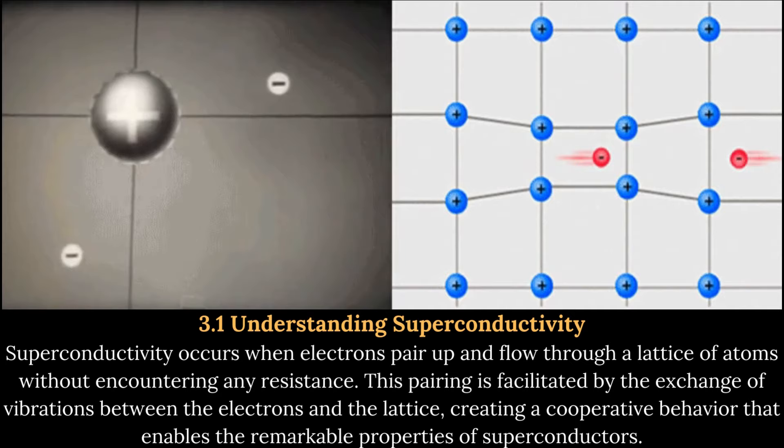Critical Temperature and Critical Magnetic Field: Every superconductor has a critical temperature and a critical magnetic field. The critical temperature is the threshold below which the material exhibits superconductivity, while the critical magnetic field represents the maximum magnetic field strength that the superconductor can tolerate while maintaining its superconducting properties.